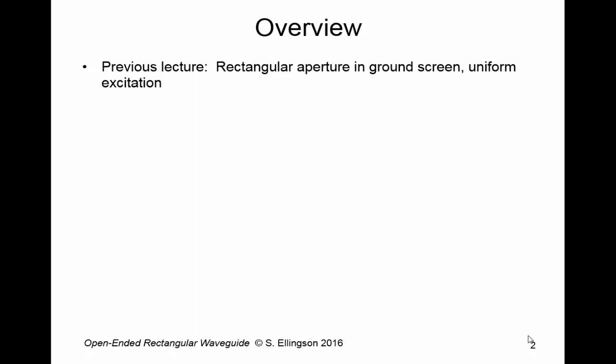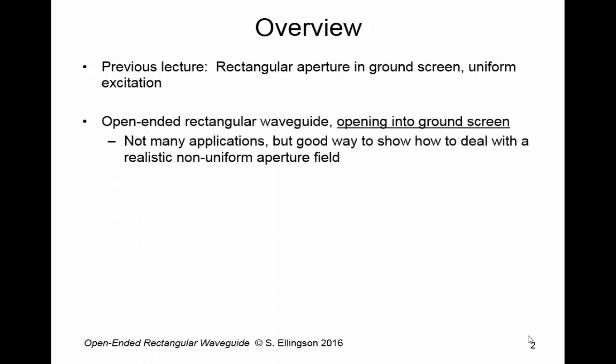In other words had constant magnitude and constant phase. In this lecture we're changing the excitation. The excitation now will be provided by an open-ended rectangular waveguide opening into a ground screen. So this problem is very similar except the aperture excitation is changing from that provided by uniform plane wave to that provided by a rectangular waveguide.